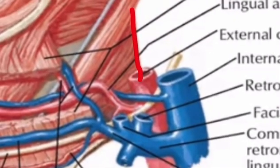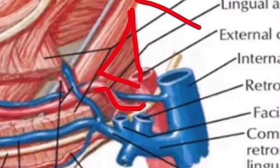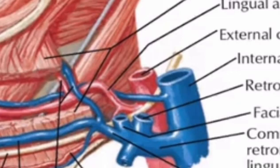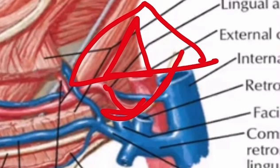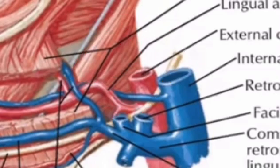In the diagram I'll mark the middle constrictor muscle — this is the middle constrictor muscle, this is the loop, and this part lies in the carotid triangle. It lies on the middle constrictor muscle, forms an upward loop, and is crossed by the hypoglossal nerve. This is the first part, this is the hypoglossal nerve, and this is the middle constrictor muscle.